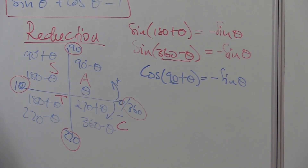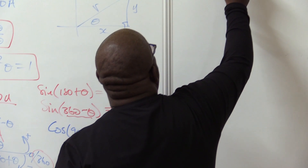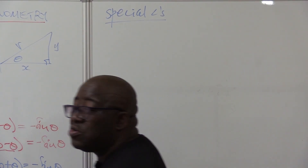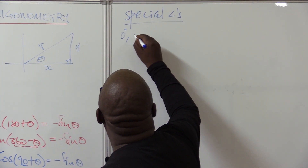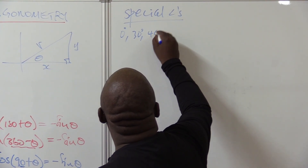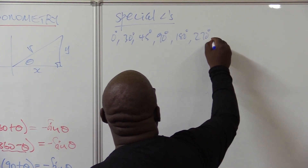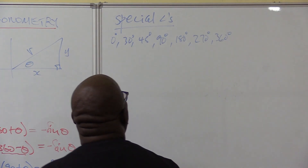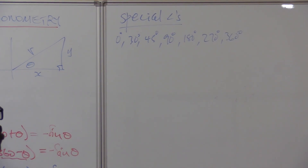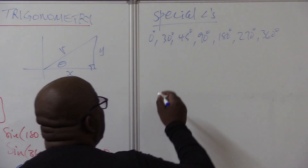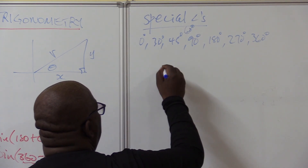After the reduction formula, let's go to special angles. Special angles are those angles that you can find without using a calculator: 0 degrees, 30 degrees, 45 degrees, 60 degrees, 90 degrees, 180 degrees, 270 degrees, and 360 degrees. These are the special angles - we can find them without using a calculator.